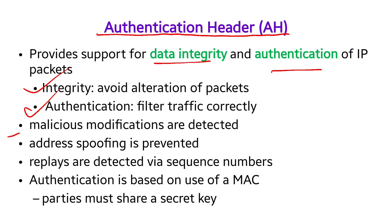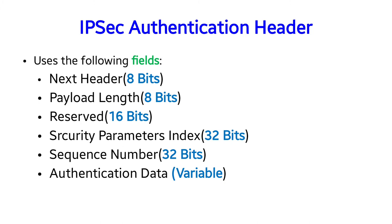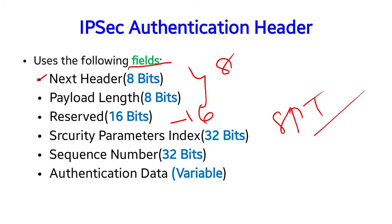Address spoofing is prevented — attempts to change the destination address are also prevented. Replays are detected via sequence numbers in the packet. Authentication in AH is based on the use of a MAC — message authentication code. The parties share a secret key. The IP security authentication header uses the following fields: next header (8 bits), payload length (8 bits), reserved (16 bits), security parameter index SPI (32 bits), sequence number (32 bits), and authentication data of variable size.